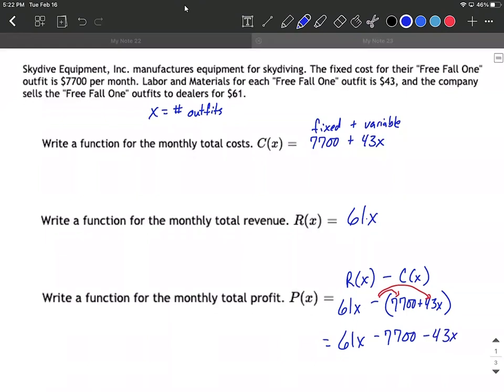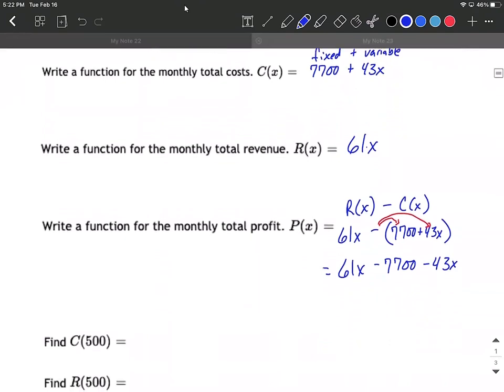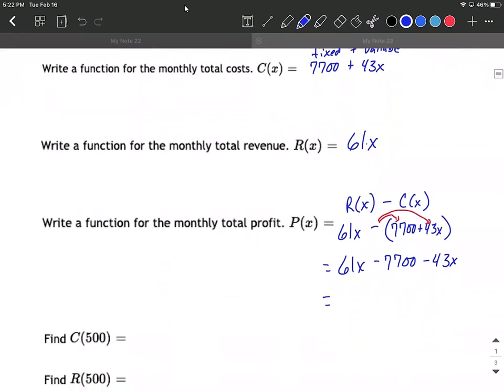So what that's going to give us is 61X minus 7,700 minus 43X. That's where most people make their mistakes—they forget to distribute to both of those terms. Now we can clean this up a little bit more by combining our like terms. It looks like we have 61X minus 43X's. That's going to leave us with 18X's minus 7,700. And that represents our profits.